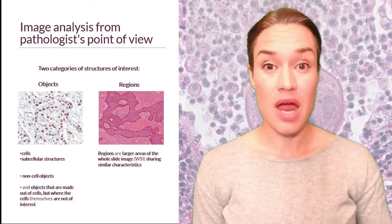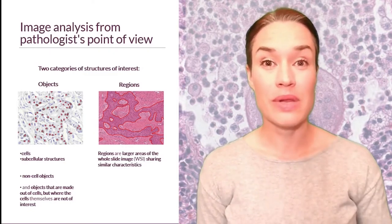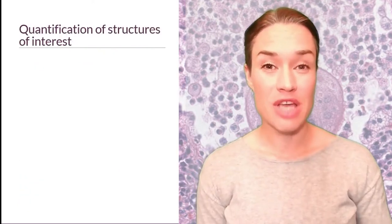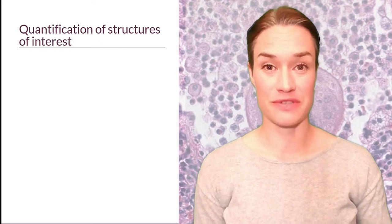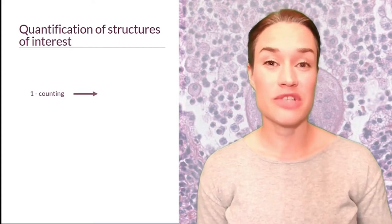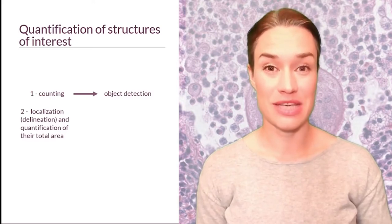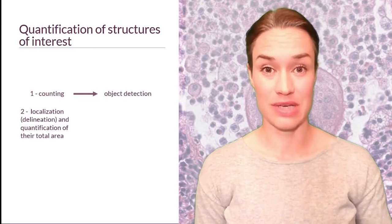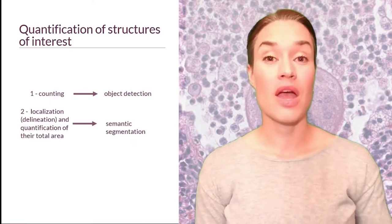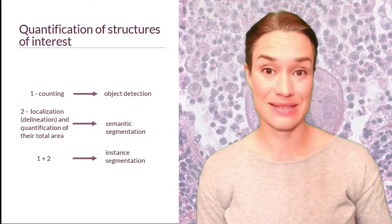Regions are larger areas of tissue that share common characteristics — for example, the epithelial and the stromal component of tumor tissue. In image analysis, we care about the quantification of structures of interest. We can be interested in counting, which corresponds to the computer vision task of object detection, or in localization and exact delineation, which corresponds to semantic segmentation, or both — which corresponds to instance segmentation.